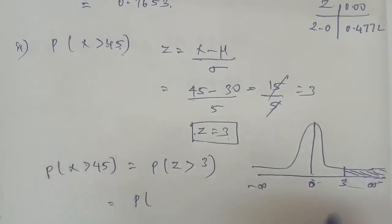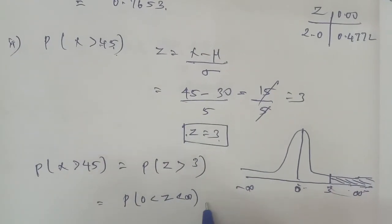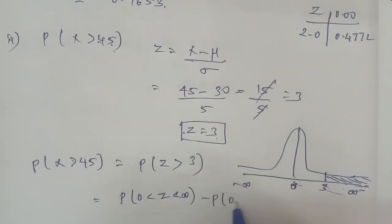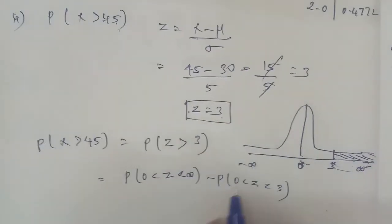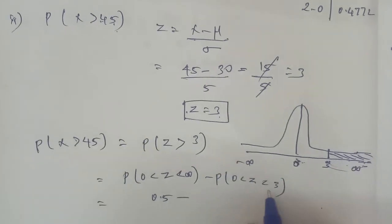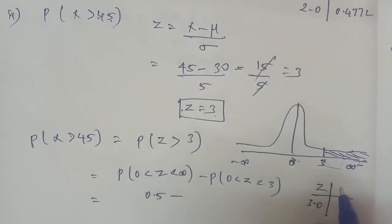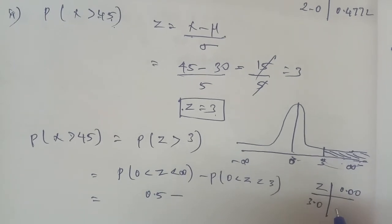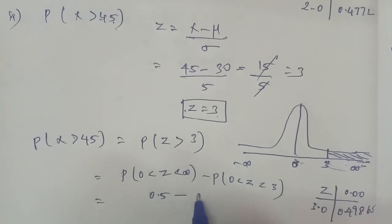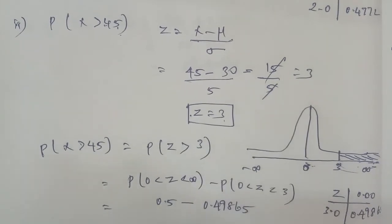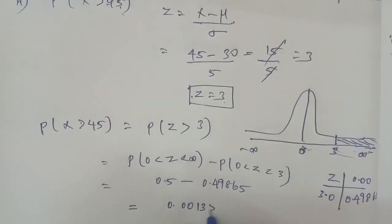P(Z > 3) equals 0.5 minus P(0 ≤ Z ≤ 3). The normal distribution table value for Z = 3.0, column 0.00, gives 0.49865. Therefore the answer is 0.5 minus 0.49865, which equals 0.00135. This is the answer for sub-problem 2. Thank you.